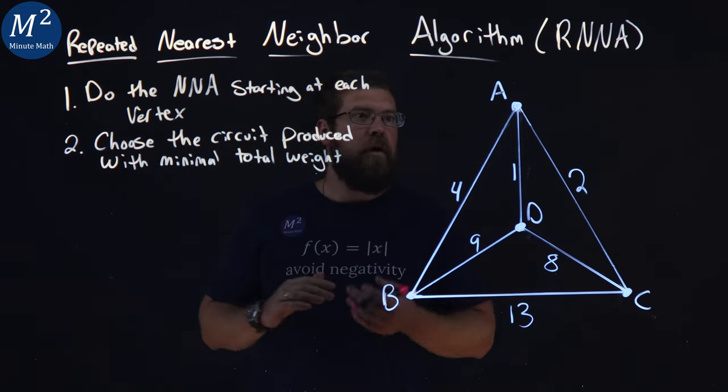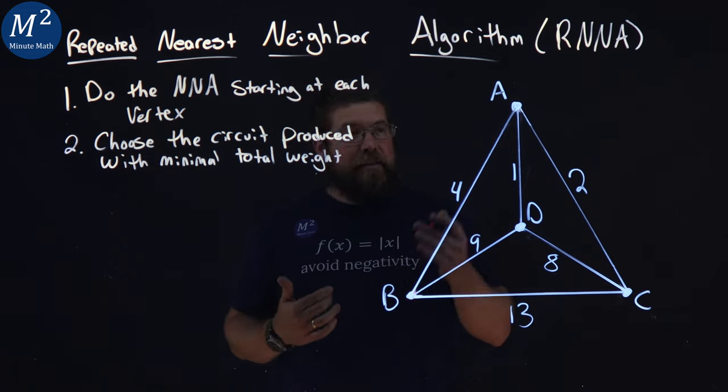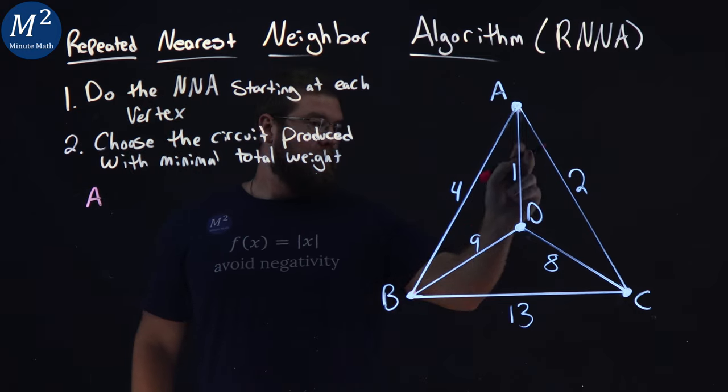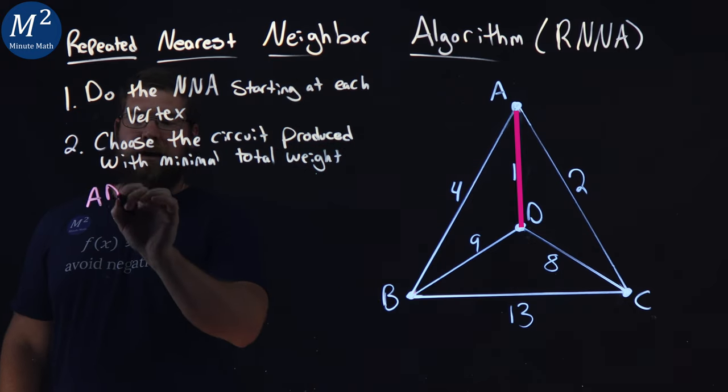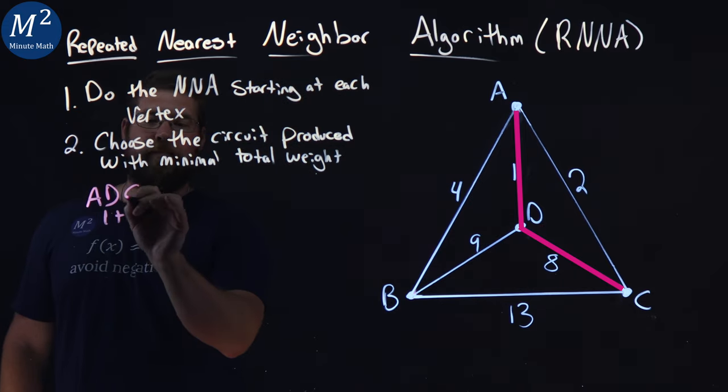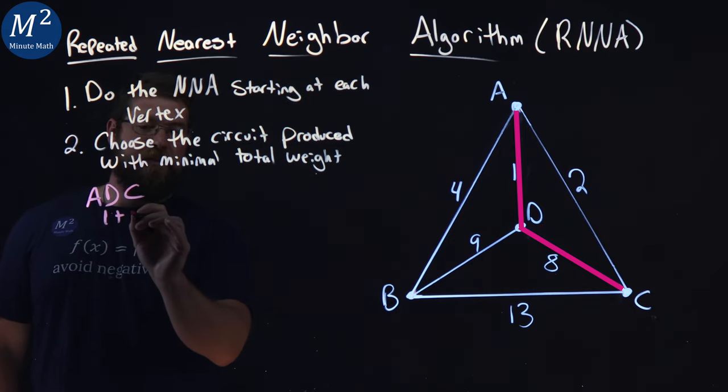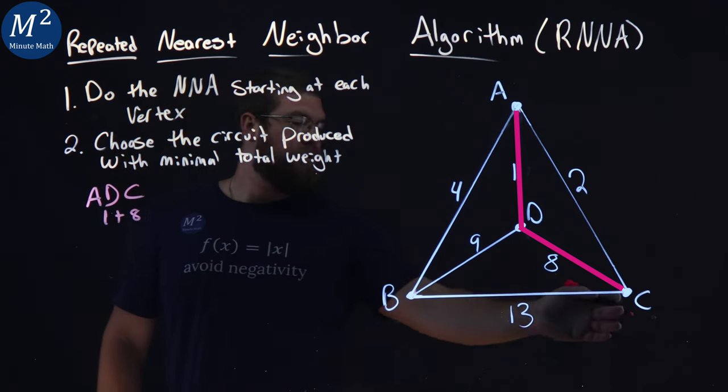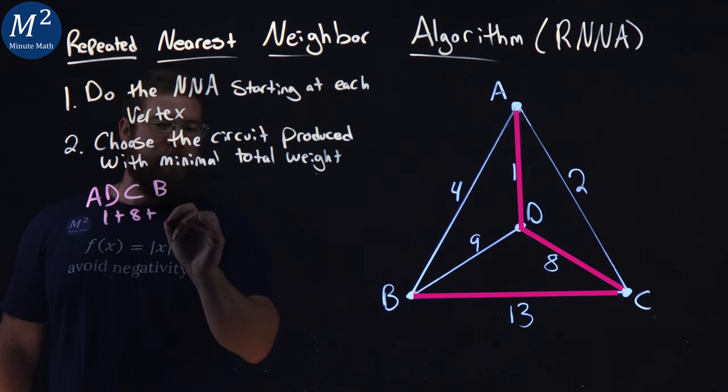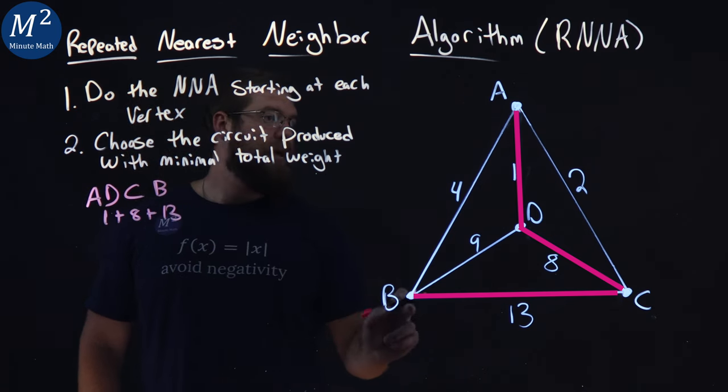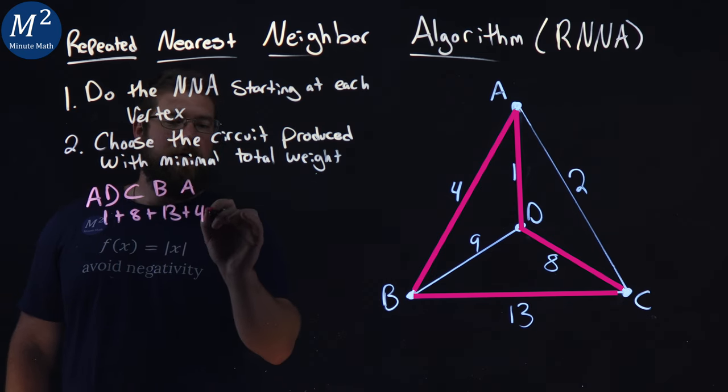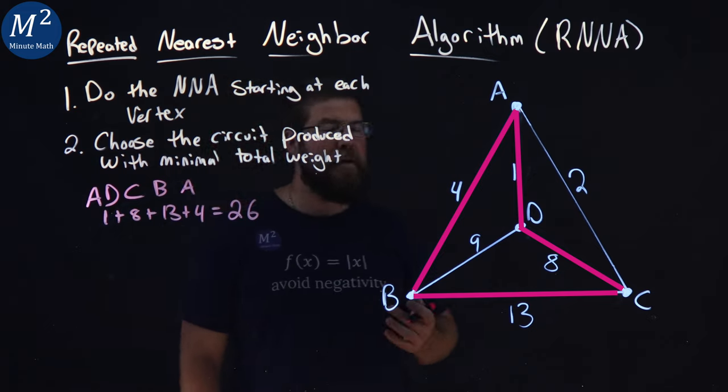All right, so we already in a previous video applied this starting at A. So we end up doing that A, nearest neighbor was D, had a weight of 1, then from D the nearest neighbor was C, had a weight of 8. Then we went to B that had a weight of 13, and then B went back to A to continue this, and that had a weight of 4, and this is a total weight of 26, just as a recap.